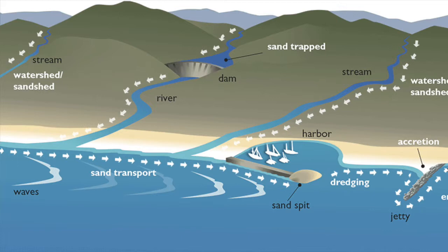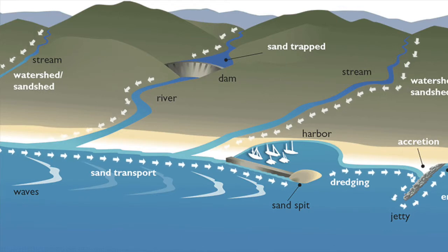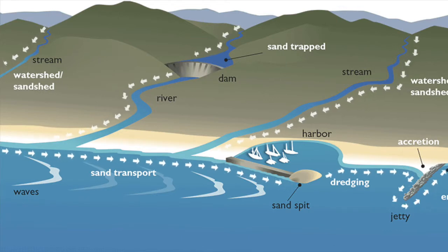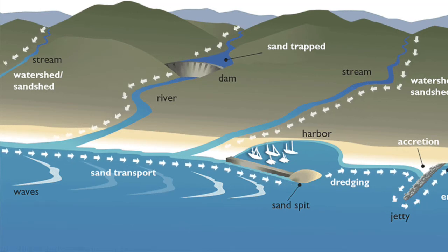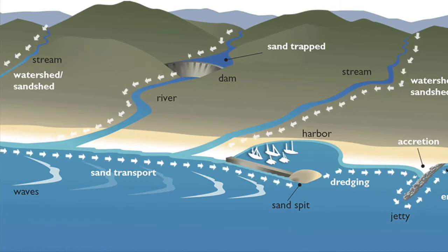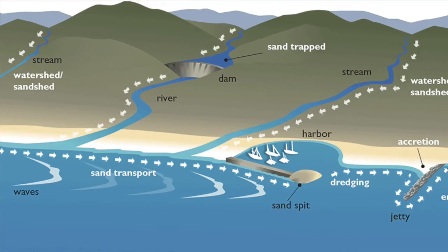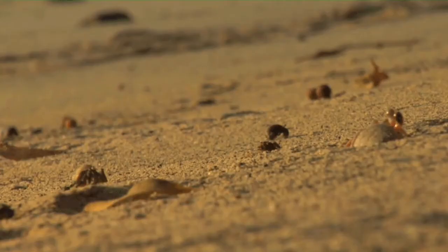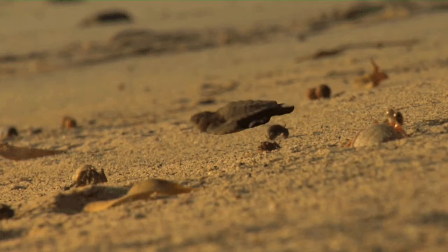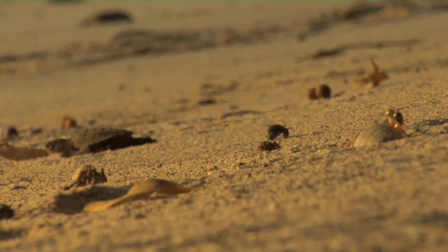Generally, this sand is eroded from inland rocks, flows down rivers, then is deposited at the coast to become sandy beaches. Longshore currents generated by waves pick up the sand from larger deposits and move it along the coast to form more beaches. The sand itself is primarily made up of quartz, along with other minerals such as small pieces of shells and sea urchin spines.